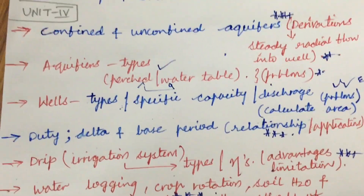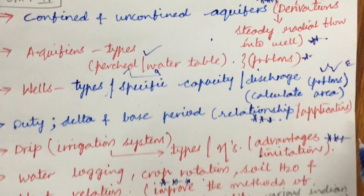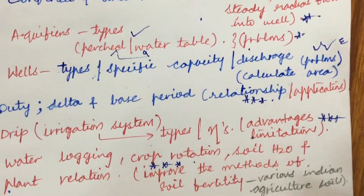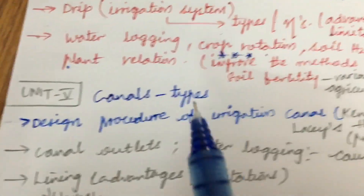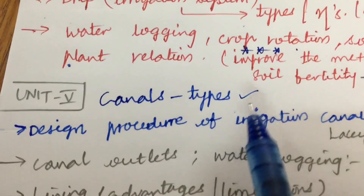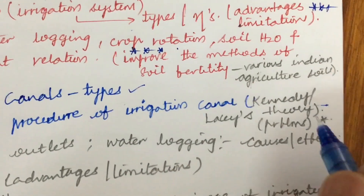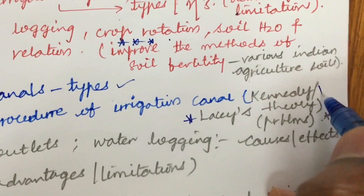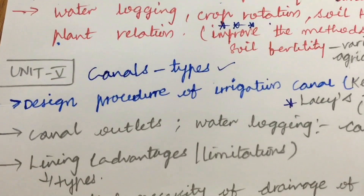If you cover all the Unit 4 concepts and work out questions one, two, and three, you can expect all five questions to be answerable from what has been explained. Unit 5 is all about canals and their types, and the design procedure of irrigation canals by Kennedy's as well as Lacey's theory. Problems based on this are asked several times and we can expect a gunshot question from this topic.